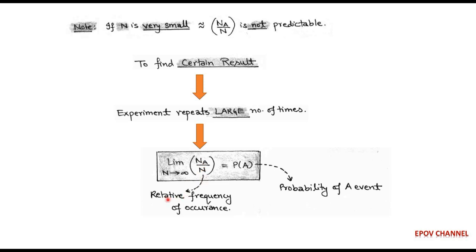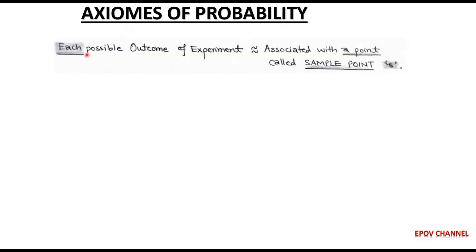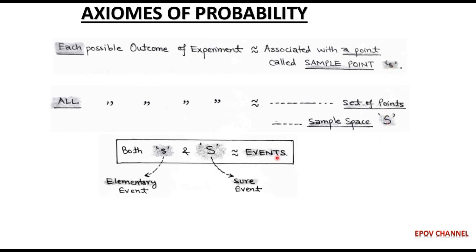The ratio Na/n is simply called the relative frequency of occurrence of head A. After discussing the concept of relative frequency to determine probability, we move to the axioms of probability — axioms meaning rules or principles. In every experiment, each possible outcome must be associated with a point called a sample point, denoted by small s. The collection of all sets of sample points is called the sample space, denoted by capital S.